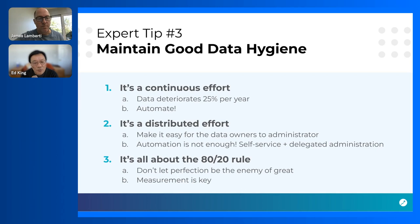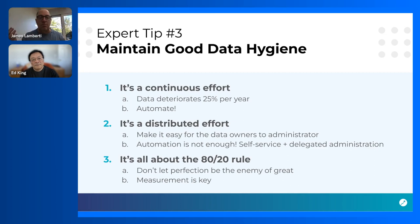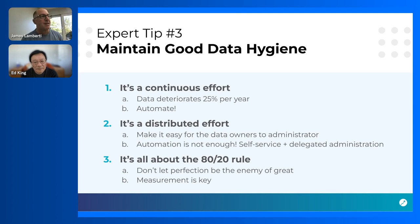I'd echo a lot of this. On the continuous effort: if you maintain hygiene on a monthly cycle, that 25%-per-year problem becomes a two-to-three percent problem per month. That mentality is vital. If you do a big-bang launch on steps one and two and then six months later the data has deteriorated substantially, you've lost confidence again — people will say 'we did this whole project, it looked great for a month.' Think of it as keeping it to a single-digit percent problem in any given 30-day period.